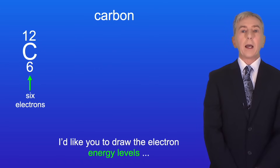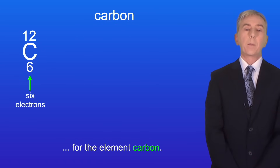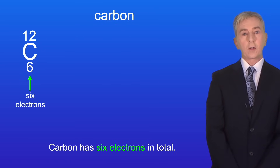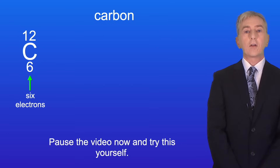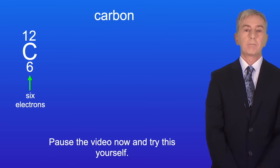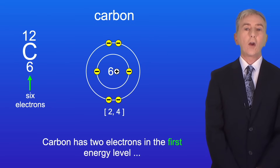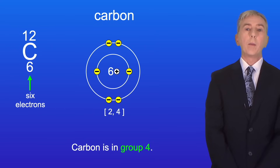I'd like you to draw the electron energy levels for the element carbon. Carbon has six electrons in total — pause the video now and try this yourself. Carbon has two electrons in the first energy level and four electrons in the outer energy level, so carbon is in group four.